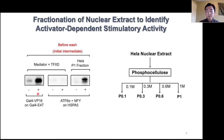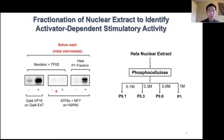The very first experiment we did was to test whether this stable initiation intermediate holds true on the GAL4-E4T template and also to validate the assay. We can see that when we incubate GAL4-VP16 with purified mediator and TF2D together with the immobilized template, we have strong activator-dependent transcription on E4T using VP16. Surprisingly, when we applied the same conditions on the HSPA5 template using ATF6 and NFY, we did not see any formation of a stable initiation intermediate. But as I mentioned, we do have evidence that HeLa cell nuclear extracts can support this activator-dependent transcription.